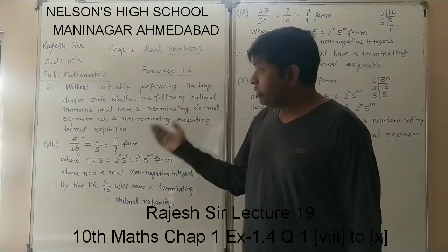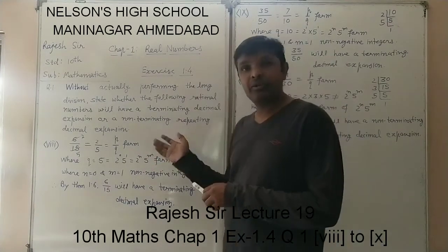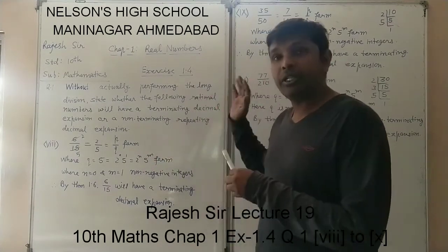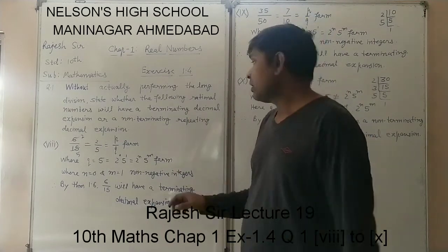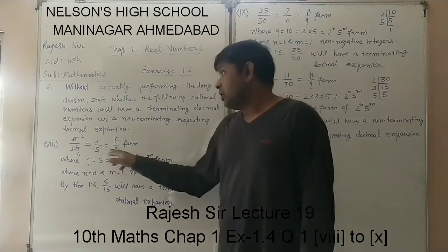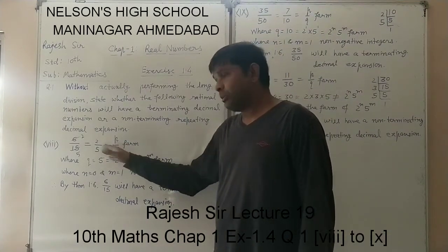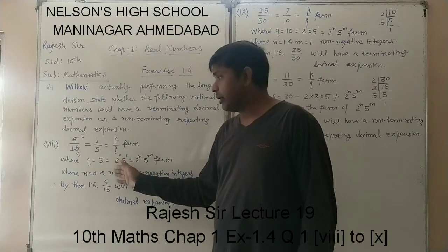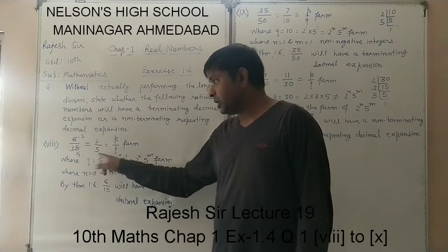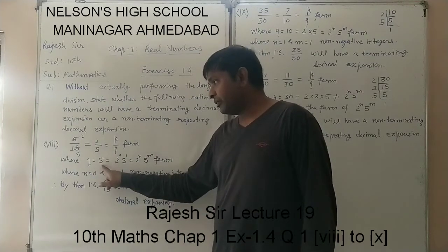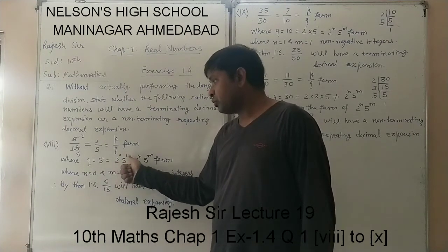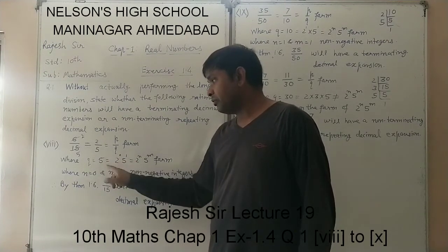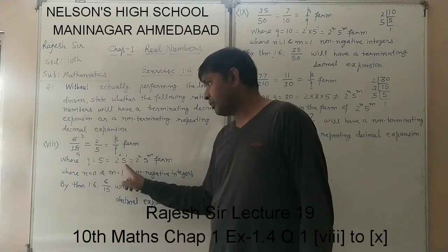Now, in the similar way as we were doing till question 7: it is in P upon Q form, and we have to focus on the Q. The denominator Q is 5. Now, 5 can be written as 2 raised to 0 and 5 raised to 1, since 5 appears once.